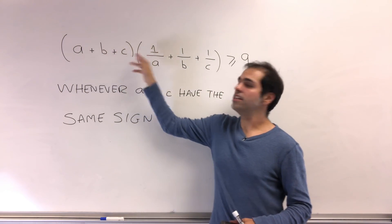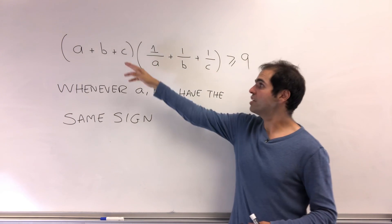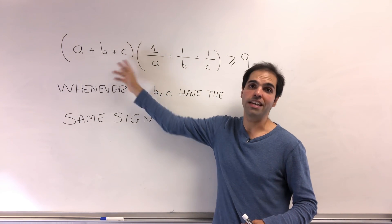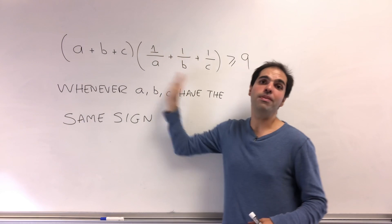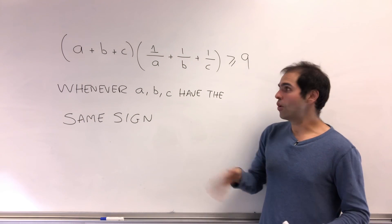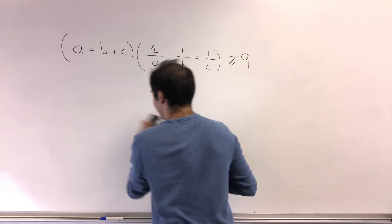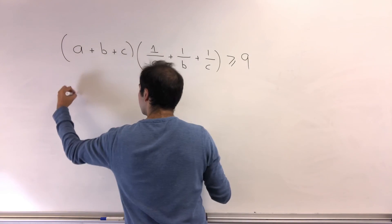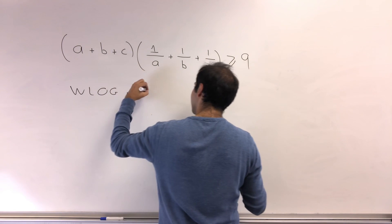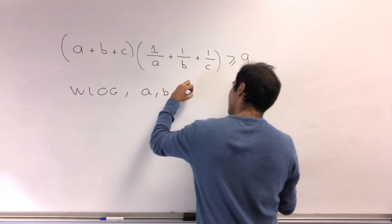Notice, if a, b, and c are all negative, we can just multiply all sides by negative 1 and get a, b, and c all positive. So, without loss of generality, assume a, b, and c are all positive.